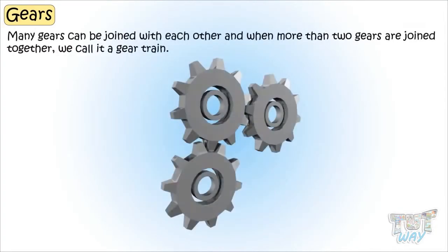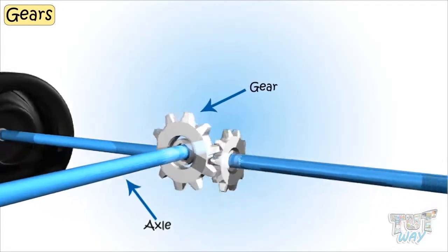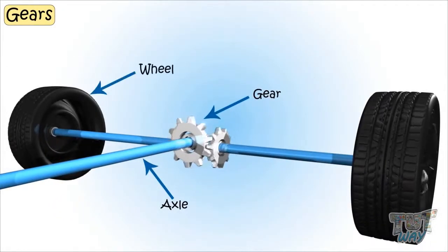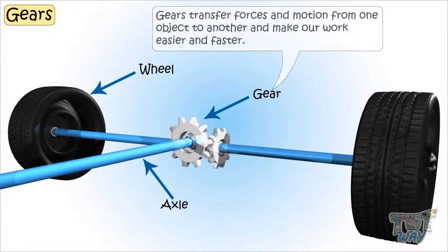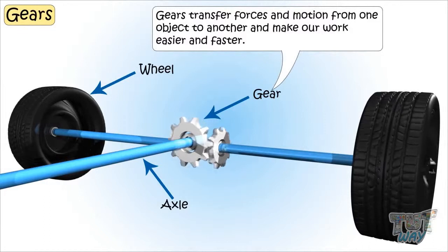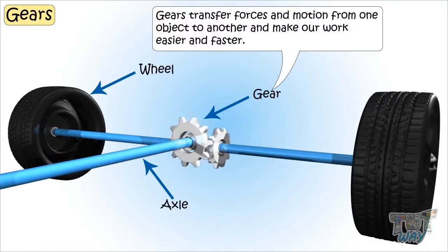Many gears can be joined with each other, and when more than two gears are joined together we call it a gear train. Gears turn on the axle, which in turn turns the wheel of the object to be moved. Gears transfer forces and motion from one object to another and make our work easier and faster.